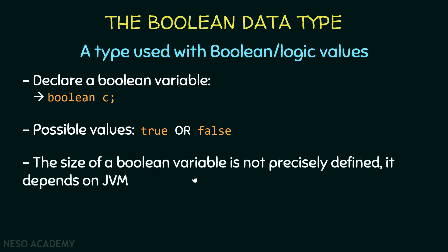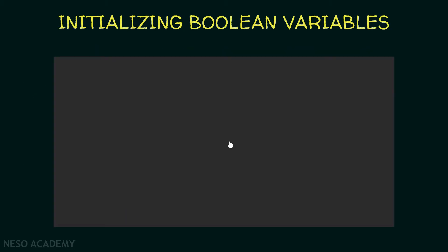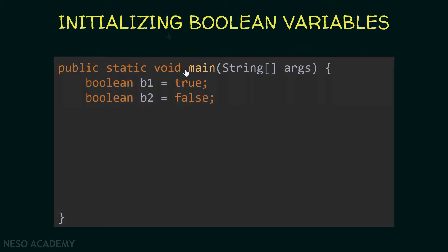A boolean variable can only contain two values: true or false. The size of a boolean variable is not precisely defined — it depends on the Java Virtual Machine. Now let's initialize some boolean variables. Inside our main method we have two boolean variables b1 and b2. We are assigning b1 to true and b2 to false.